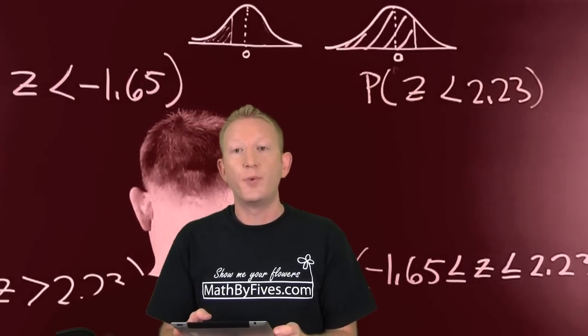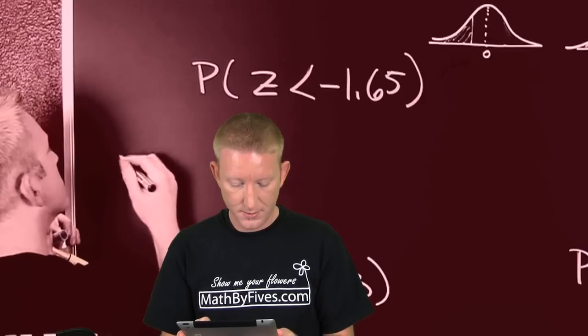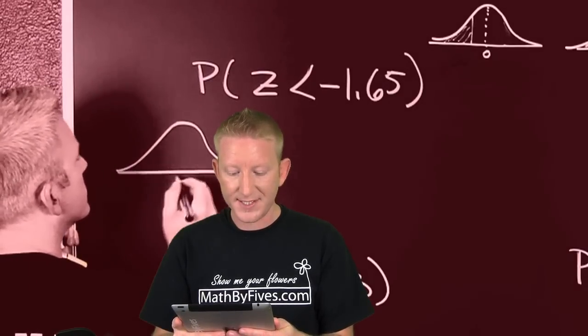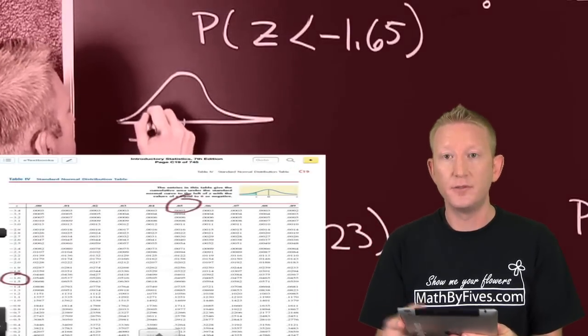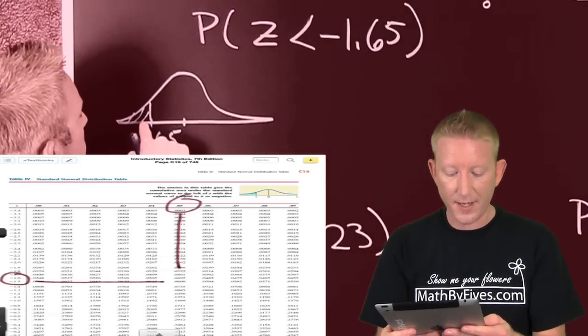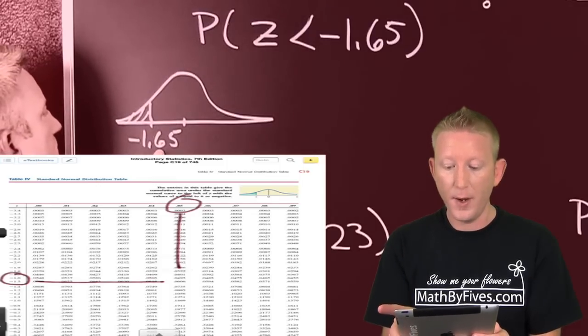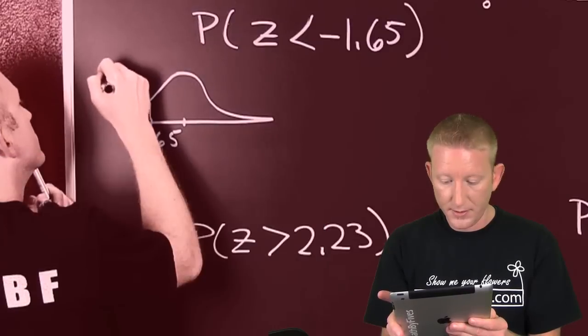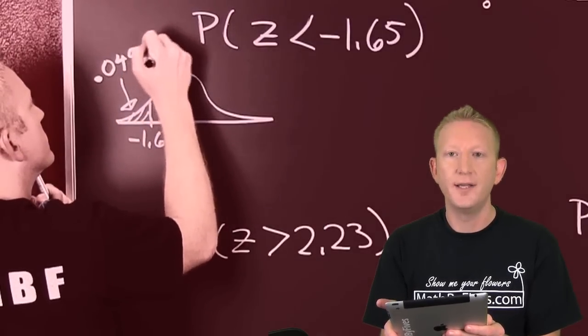So if we're looking for the probability that a value is less than minus 1.65, then we're going to find the table for the left side distribution because our z values are negative. And then we're going to go down to minus 1.6 and over to 0.05, and we look up that probability and it's going to be 0.0495. Well, that's good times.